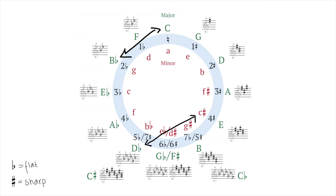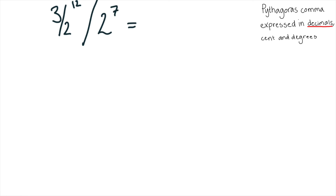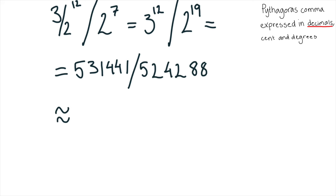And this ratio could be calculated as that 7 octaves removes from 12 fifths like this. 3 divided by 2 raised to 12 divided by 2 raised to 7 equals 3 raised to 12 divided by 2 raised to 19 equals 531,441 divided by 524,288 equals 1.01364.